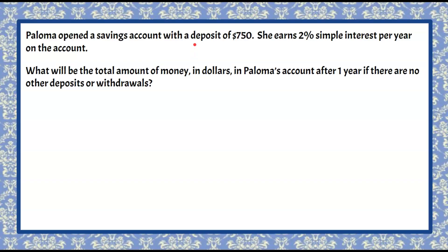Welcome back. Let's go over what we're given. There's a deposit of $750 into a savings account, meaning Paloma put $750 of her money into the bank for safekeeping. We're told there is a 2% simple interest per year — that's the interest rate the bank gives her for holding her money. We want to find the total amount of money in her account after one year, with no other deposits or withdrawals.